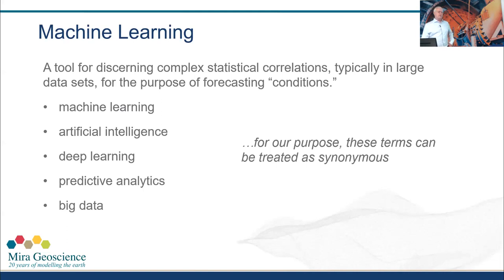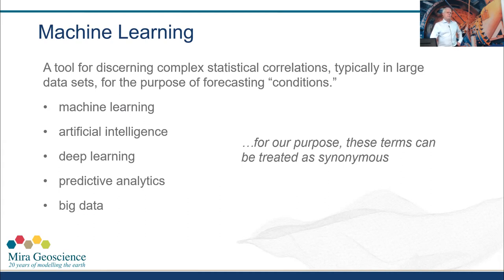I use the terms machine learning and AI synonymously. Strictly speaking, machine learning is a subset of artificial intelligence, but you see these terms bandied around — big data, neural networks, machine learning, AI — it's all kind of the same thing for our purposes today. What it's all about is learning to find patterns in data from which you can make useful predictions. That's what all machine learning is trying to achieve, no matter what field it's applied in.